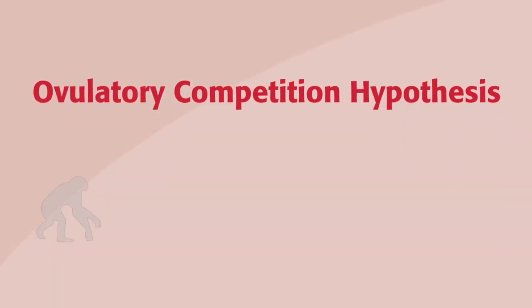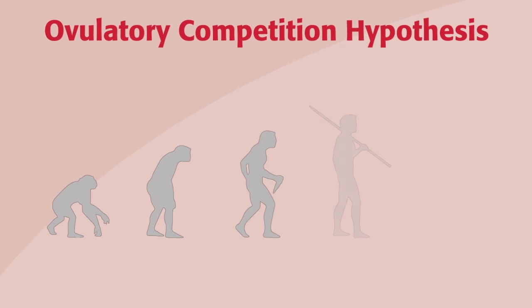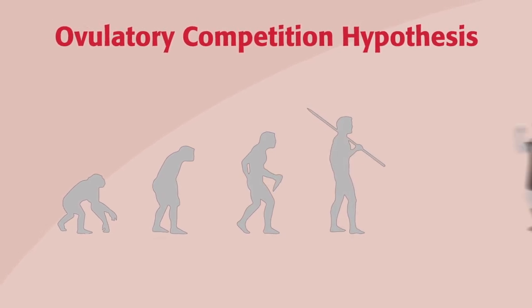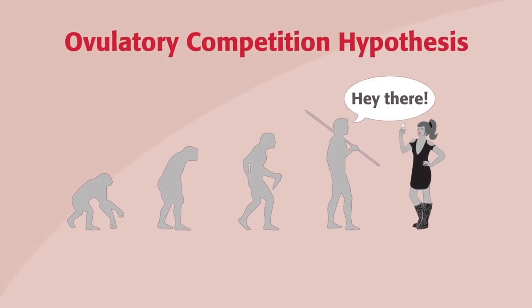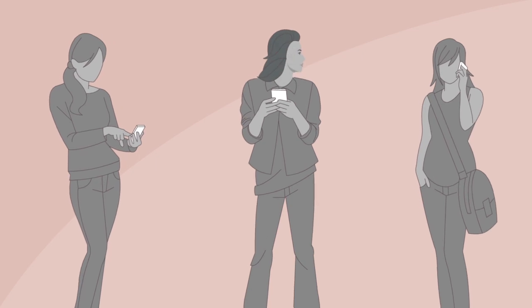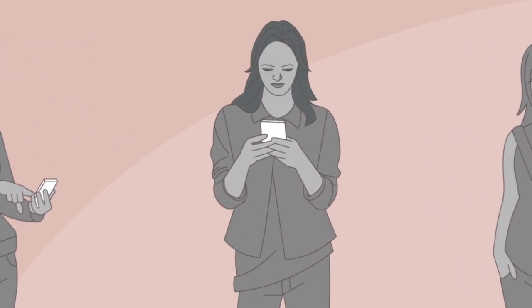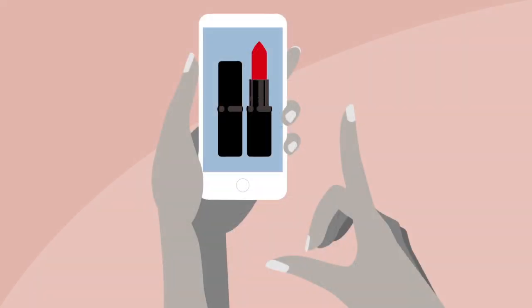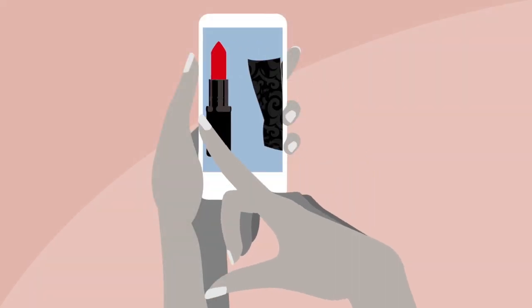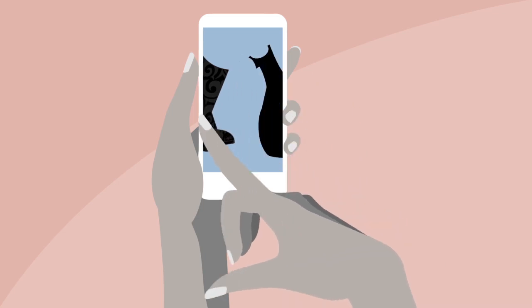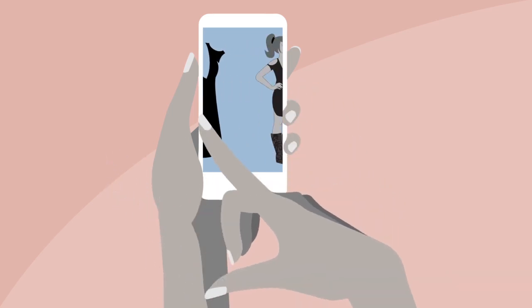For example, my colleagues and I coined the term the ovulatory competition hypothesis, which holds that evolution has endowed women with certain motivations and preferences near ovulation. That ovulation shouldn't just shift women's mate preferences, but should also amp up their desire to compete with other women for status and access to mates — and this can have implications for women's consumer behavior, because they use consumer products as tools to enhance attractiveness.